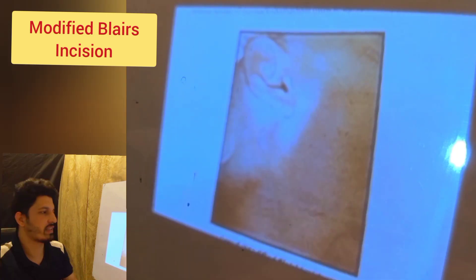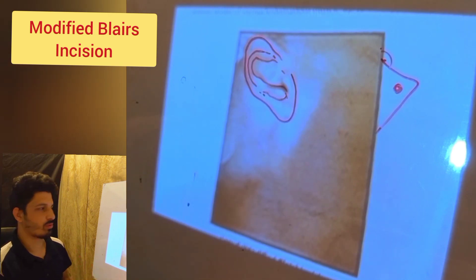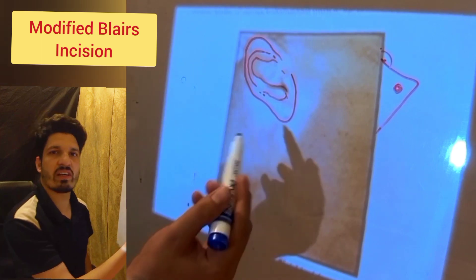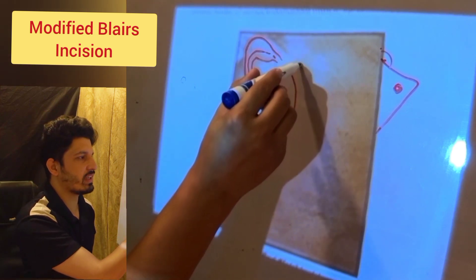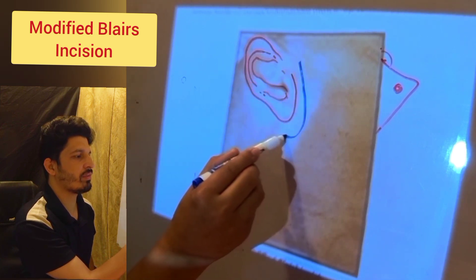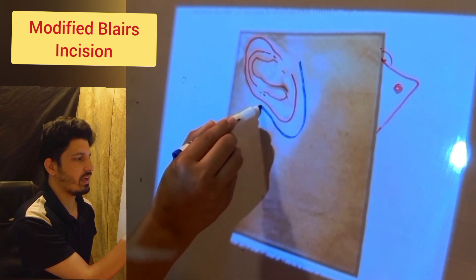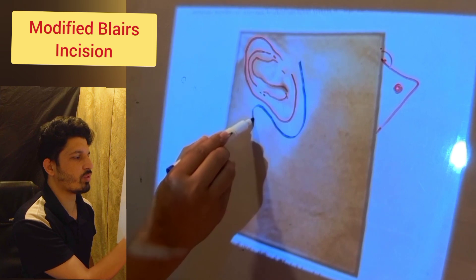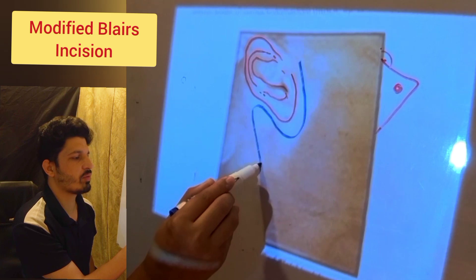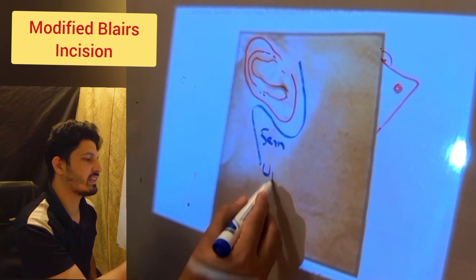Let's learn the Modified Blair's Incision in CN. Starting in the pre-auricular area, just in front of the tragus, it winds around the lobule of the ear, over the mastoid, and then moves down over the anterior border of the sternocleidomastoid for almost five centimeters, up to the upper cervical crease.